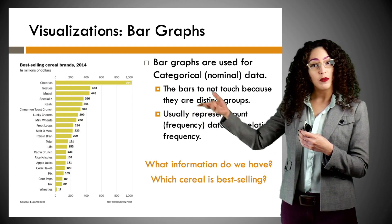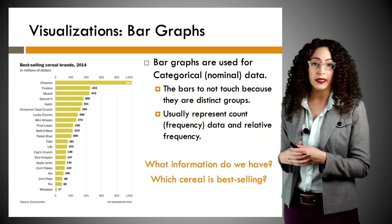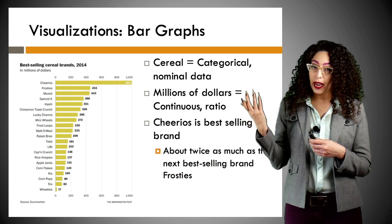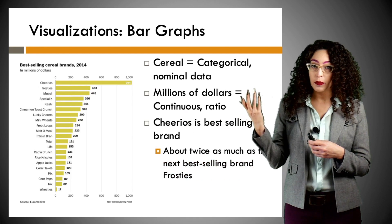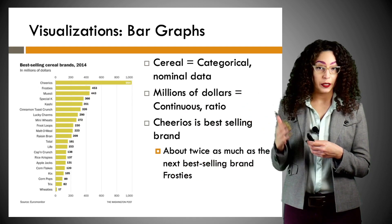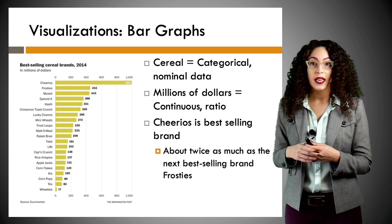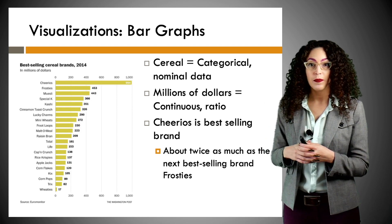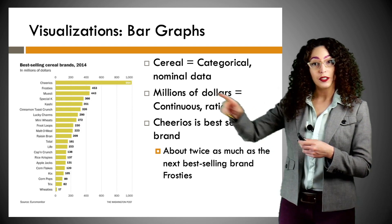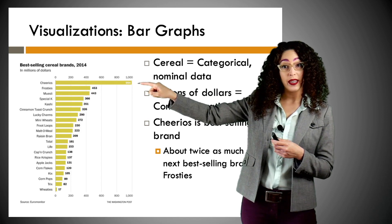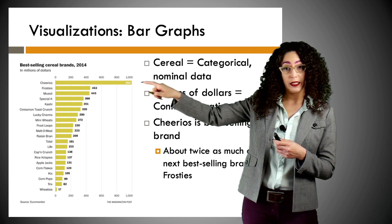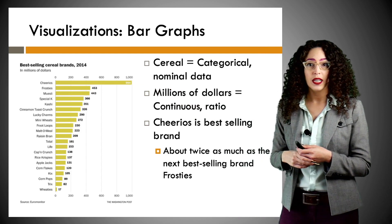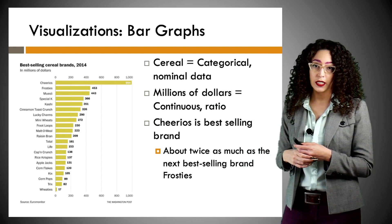So what information do we have here, and which cereal is the best-selling cereal? We have categorical nominal data — different types of cereal categories or brand names — and we have millions of dollars in the continuous ratio. And apparently Cheerios is our best-seller by quite a margin. It's almost twice as popular as the next most famous brand, Frosties.